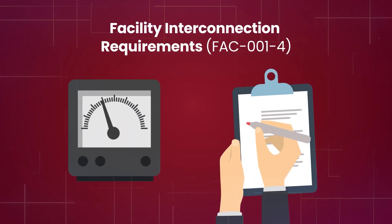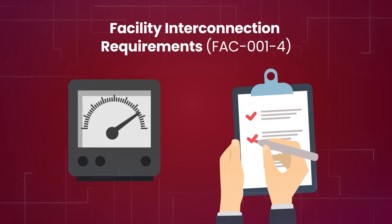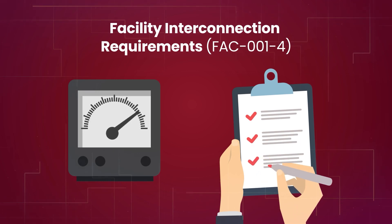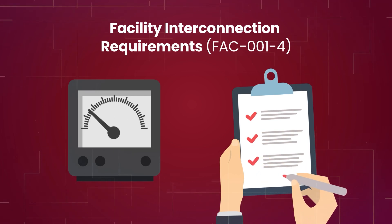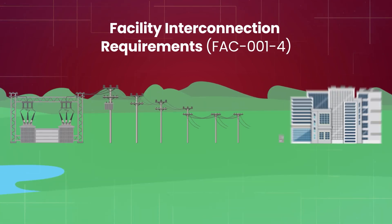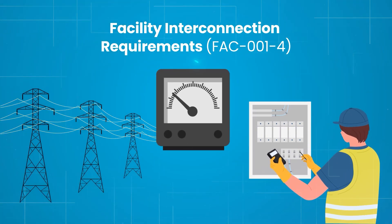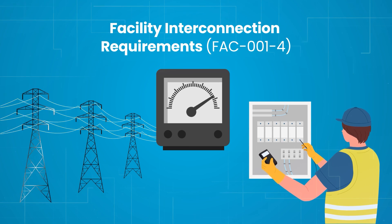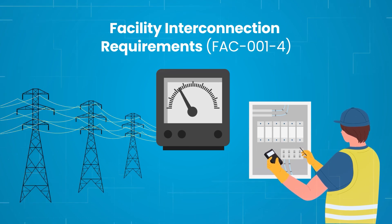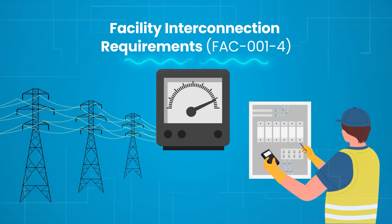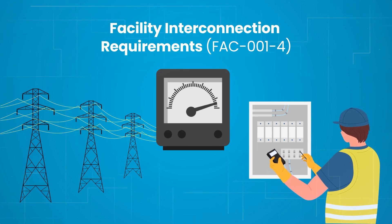Facility interconnection requirements, FAC-001-4. It requires transmission owners to document and maintain interconnection requirements, ensuring entities meet design and operational criteria for system reliability, including voltage, frequency control, and protection systems.